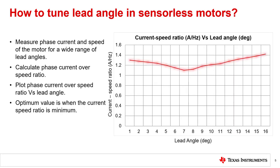In this slide we will discuss how to tune lead angle in sensorless motors. To tune lead angle in sensorless motors, we measure the phase current and speed of the motor for a wide range of lead angles. Optimum efficiency is achieved at the lead angle where the ratio of phase current over speed is minimum.